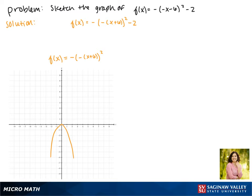Since we are adding 6 to x, this moves our function six spaces to the left. And now our vertex is at the point negative six zero.